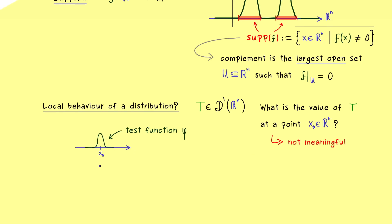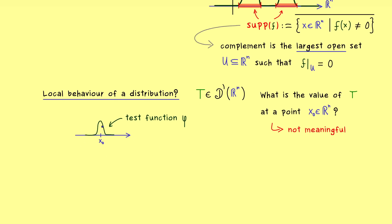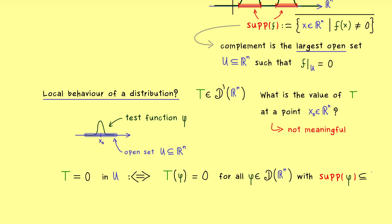For a given point x₀, we can look at test functions around this point — test functions that are zero except for a small neighborhood around x₀. By using these test functions we get some information about what the value of T at x₀ should be, but we don't get the full information. So the question for values at single points is not so meaningful. Instead, we smear over the point and consider a whole open set around it. So let's consider an open set U in R^n, and define what it means that the distribution T vanishes on this set: we apply T to any test function φ whose support lies inside U, and if we always get zero, then T vanishes on U.